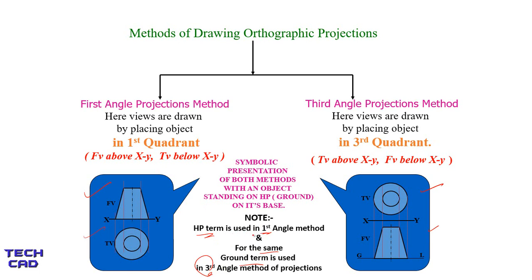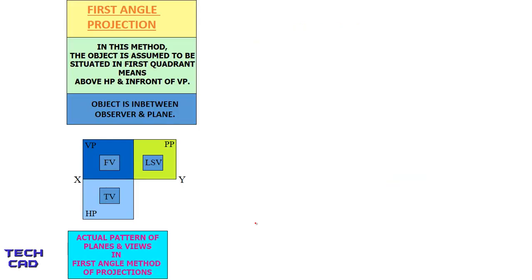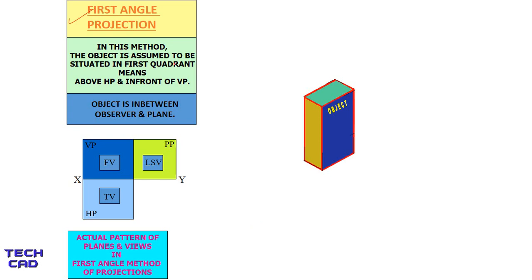HP term is used in first angle and the term 'ground' is used in third angle — this is an important distinction. Sometimes questions ask about the difference between HP and ground plane. To understand orthographic projection, I will take a small cuboid object and make a projection of this cuboid on the horizontal plane, vertical plane, and profile plane — that means making the front view, top view, and side view of this object in first angle projection. In this method, the object is assumed to be in the first quadrant — above HP and in front of VP.